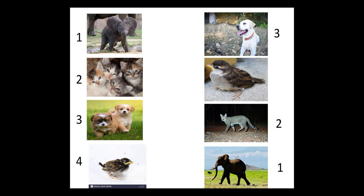Fourth is a picture of a chick. And a chick is the young one of a sparrow. Now where is sparrow here? Sparrow is here at number 4.